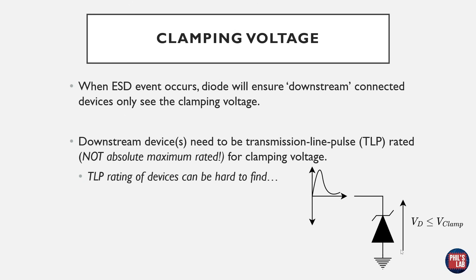You might think this exceeds the 3.3 volts our device is capable of, but ICs are typically rated at a certain transmission line pulse, or TLP, rating, which is different from the absolute maximum rating you'll see on datasheets. The TLP rating is quite hard to find for most ICs in their datasheets, so it usually pays off to find a TVS diode with as small a clamping voltage as possible.